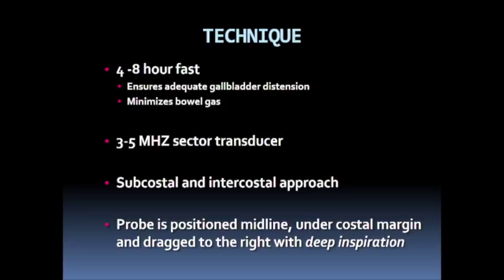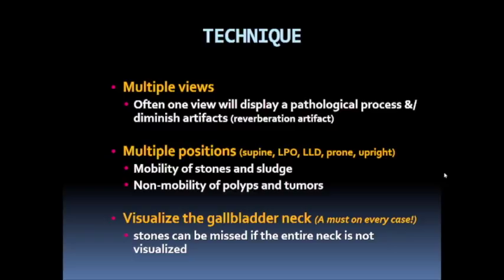When we start the gallbladder evaluation, we typically use a three to five megahertz sector transducer and scan from both subcostal and intercostal approaches. When scanning from a subcostal approach, the probe is positioned midline under the costal cartilage and dragged to the right side. During subcostal imaging, it's important to have the patient inspire deeply, as deep inspiration improves visualization of the gallbladder. Multiple views are essential, as one view may display pathology or a particular artifact that requires confirmation.